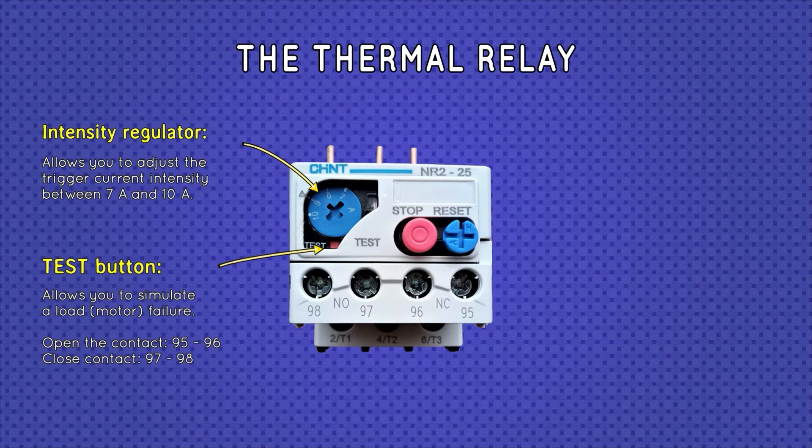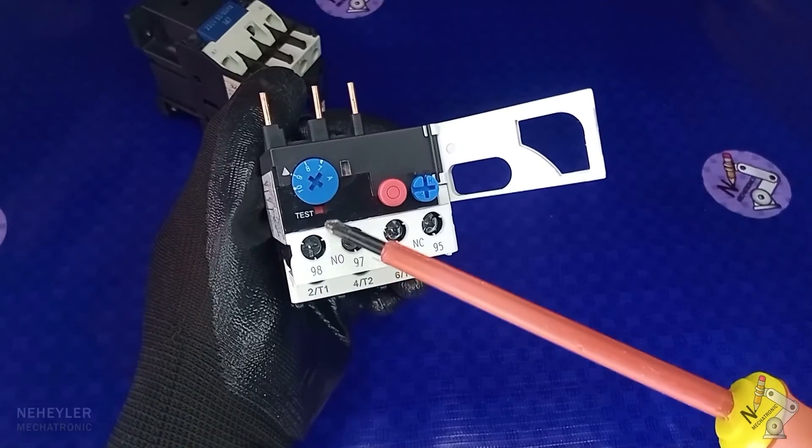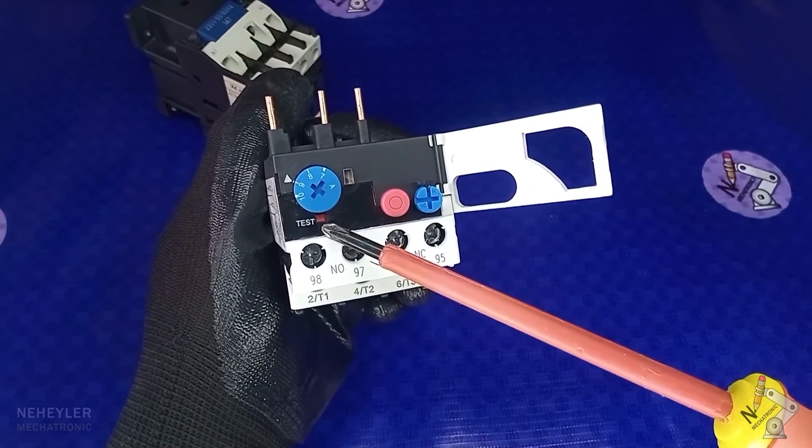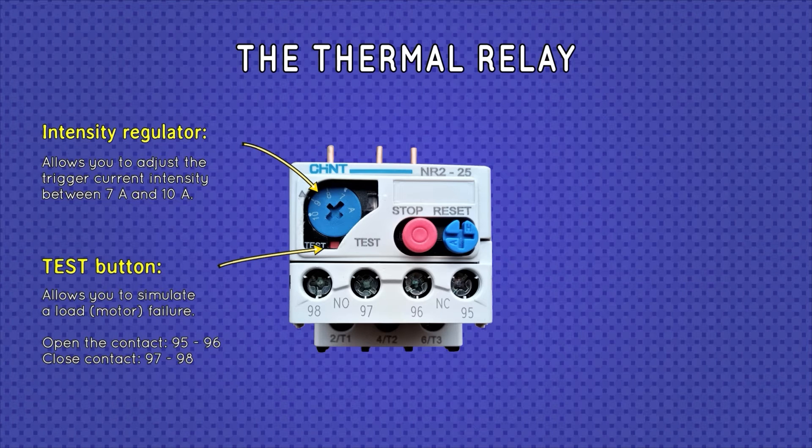The test button, which allows us to simulate an engine failure. In this model we have it here below the dimmer switch. If this test button is pressed, then what it does is it opens the normally closed contact 95, 96 and closes the normally opened contact 97, 98. And these will remain in that state.